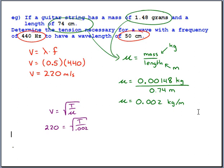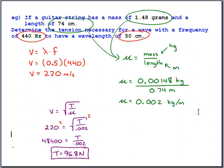Now using V = √(T/μ), we square both sides: 220² = T/μ, so 48,400 = T/0.002. Multiplying both sides by 0.002 gives T = 97 newtons. That's the required tension — enough to support about 10 kilograms of mass, or around 20 pounds. It's quite significant tension in the string.